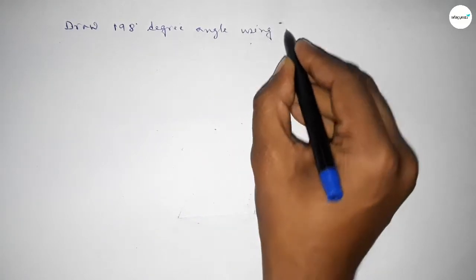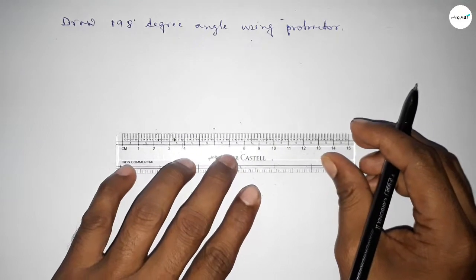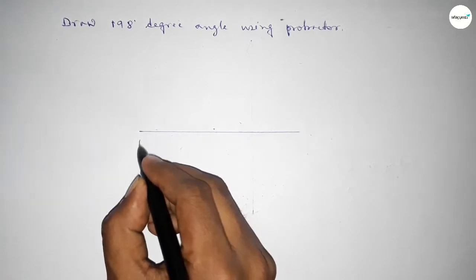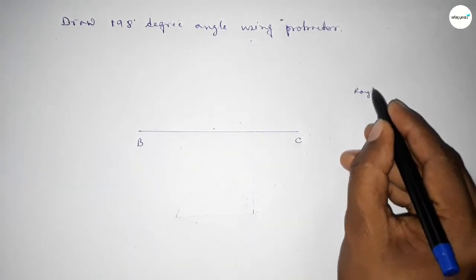So let's start the video. First of all, we have to draw here a straight line of any length. So first drawing here a line. Next, taking here point B and here point C. Now roughly discussing some calculation here.